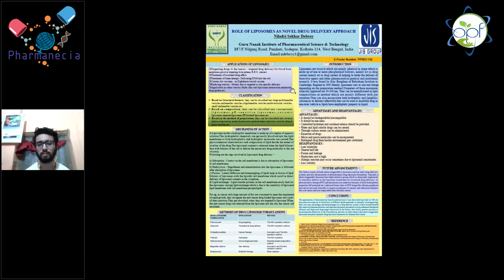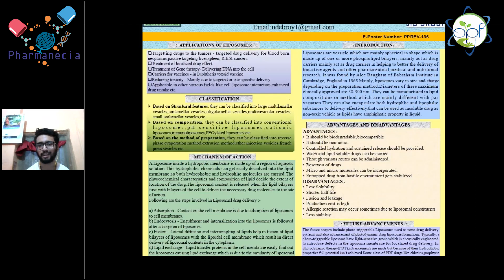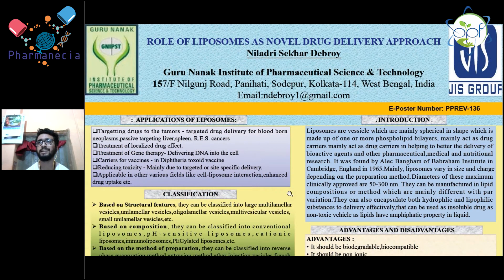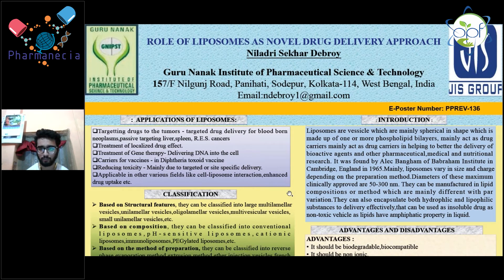Liposomes are very basic structures which are mainly spherically shaped. They have one or more phospholipid layers, which are mainly acting as co-carrier drug delivery systems. They can also be used in medical and pharmaceutical research. Liposomes were mainly found by Alec Bangham at the Babraham Institute in Cambridge, England, in 1965.